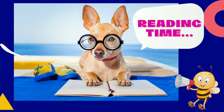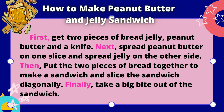Reading time. Let us read the directions on how to make a peanut butter and jelly sandwich. First, get two pieces of bread, jelly, peanut butter, and a knife. Next, spread peanut butter on one side and spread jelly on the other side. Then, put two pieces of bread together to make a sandwich and slice the sandwich diagonally.